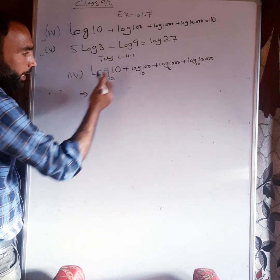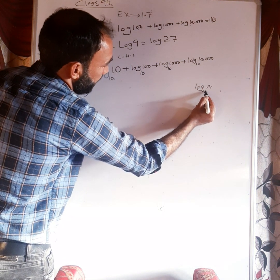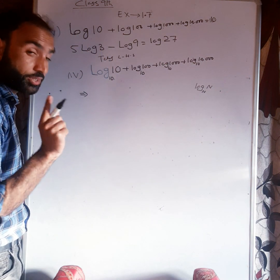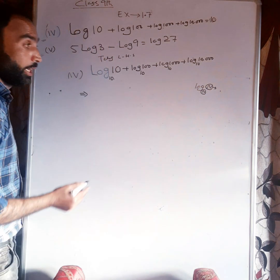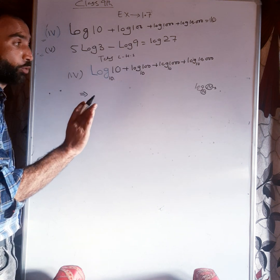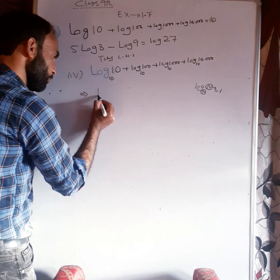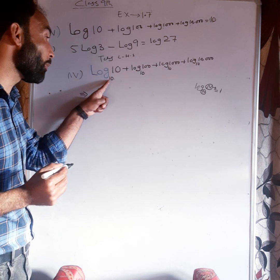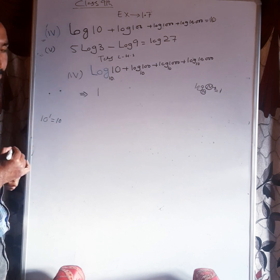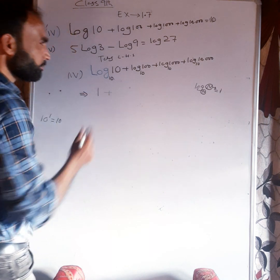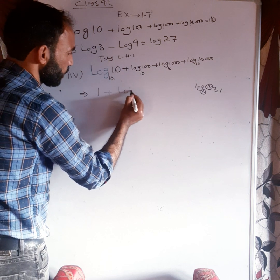The condition for logarithm: the base must be greater than zero, not equal to one, and the number must also be greater than zero. Now, log of ten to base ten — ten is ten raised to the power one, so log ten to base ten equals one.